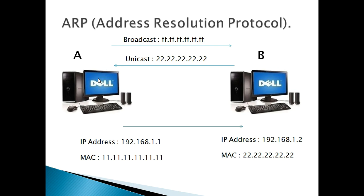If you know the IP address of a host and try to ping it to check reachability, you can do that — but how do you find the MAC address of that PC? To discover a MAC address, we use a protocol called ARP, which stands for Address Resolution Protocol. Let's look at how it works.